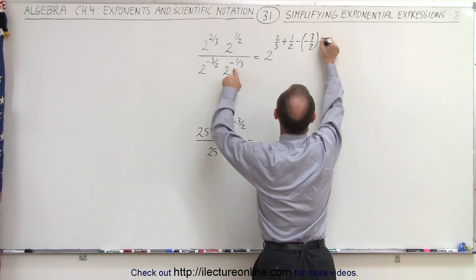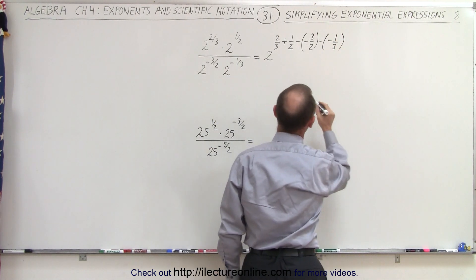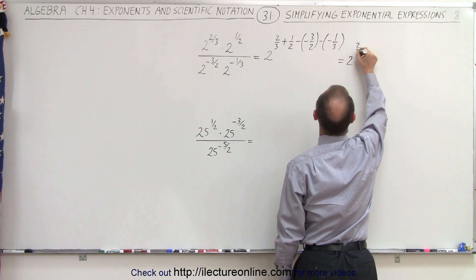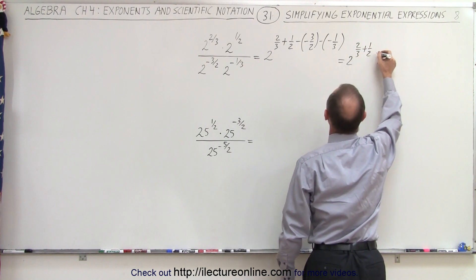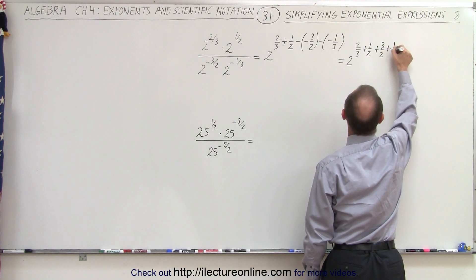And then we subtract this exponent, which is also a negative exponent, negative 1 third. Let's simplify this and see what we get. This is 2 to the 2 thirds plus 1 half plus 3 halves and plus 1 third.